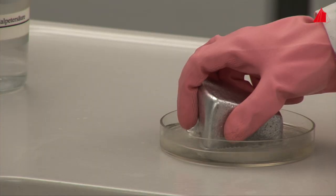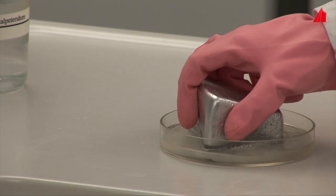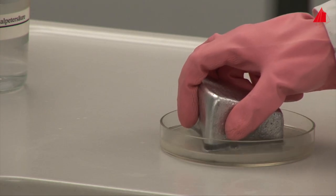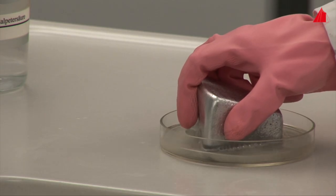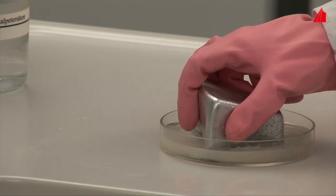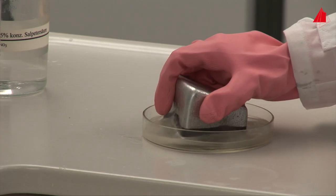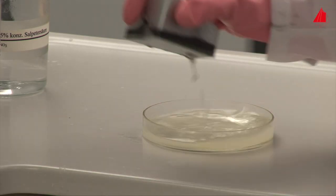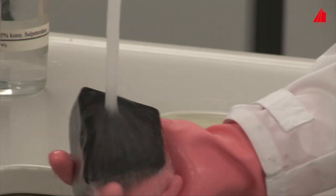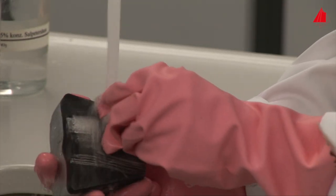After washing and drying the sample, the material tester dips the ground surface into a suitable etchant. In this case, the etchant consists of a mixture of different acids. Special care should be taken here. The material tester protects herself with a lab coat, special gloves and safety glasses. After half a minute of contact time with the etchant, she washes the sample thoroughly with water and gently wipes off the grey coat of particles using cotton wool.